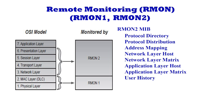User History: enables the network manager to configure history studies of any counter in the system, such as a specific history on a particular file server or a router-to-router connection. Probe Configuration: this RMON2 feature enables one vendor's RMON application to remotely configure another vendor's RMON probe.